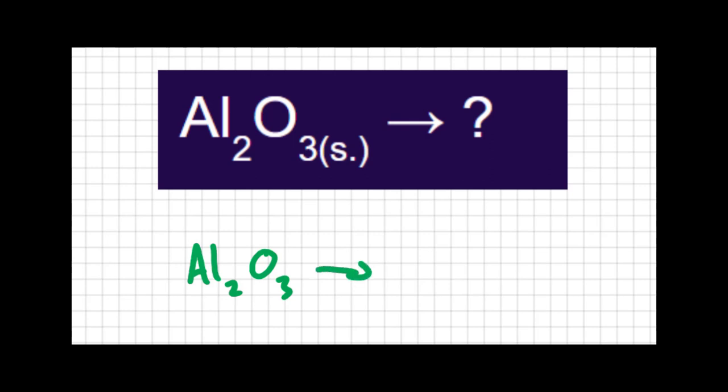Now aluminum is just plain old Al, it's not a diatomic element, it's not Al2, it's just plain aluminum. Oxygen is a diatomic, so pure oxygen is O2. Those are my products, now we have to balance.